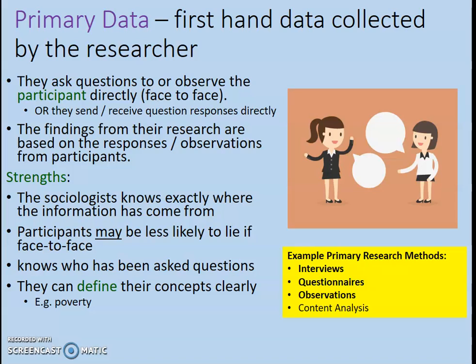Let's get started with primary data. Primary — hopefully the clue is in the word — it's first-hand. The researcher themselves is there to collect the data, asking questions to participants or observing participants directly. Quite often primary data is collected face-to-face, though it also includes questionnaires sent by email or post, where the researcher has written the questions and collects the responses. The findings are based on the responses and observations of participants in their study.